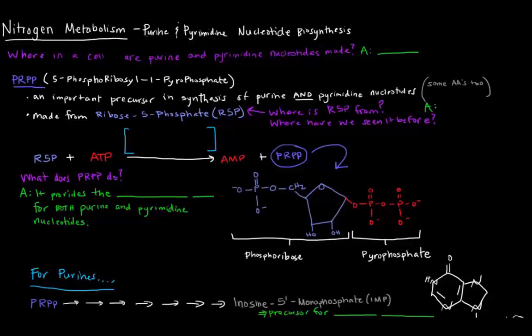In this video, I want to talk a little bit about purine and pyrimidine nucleotide biosynthesis. Basically, how are purine and pyrimidine nucleotides made? Where does that even happen? They are made in the cell cytosol, the cytoplasm of the cell.